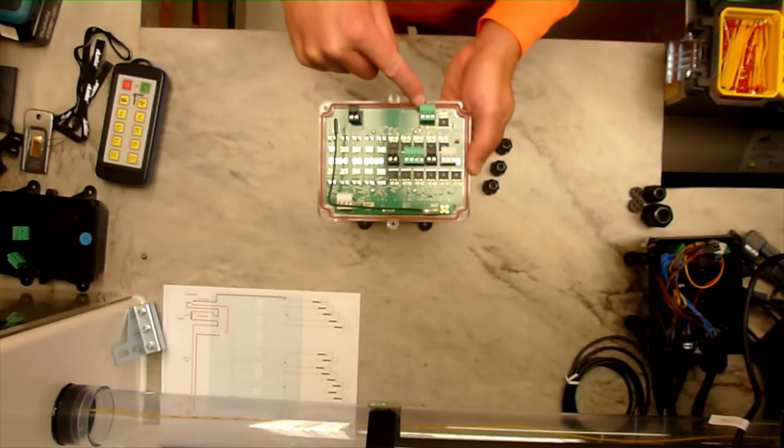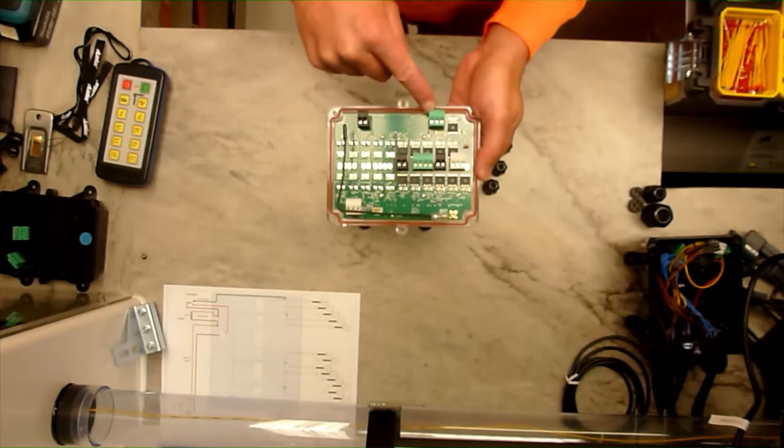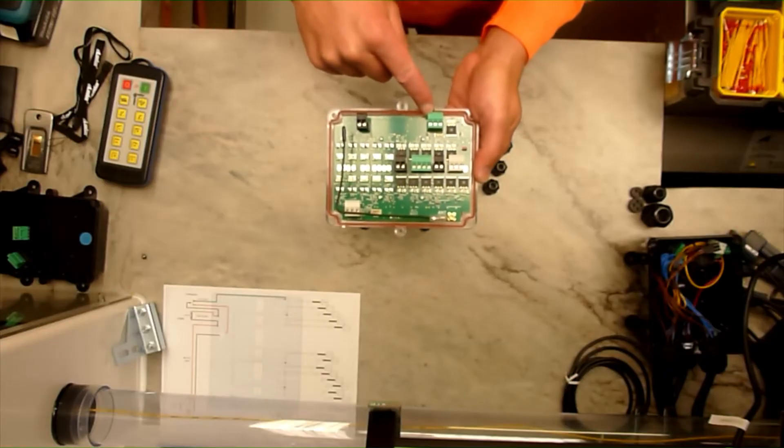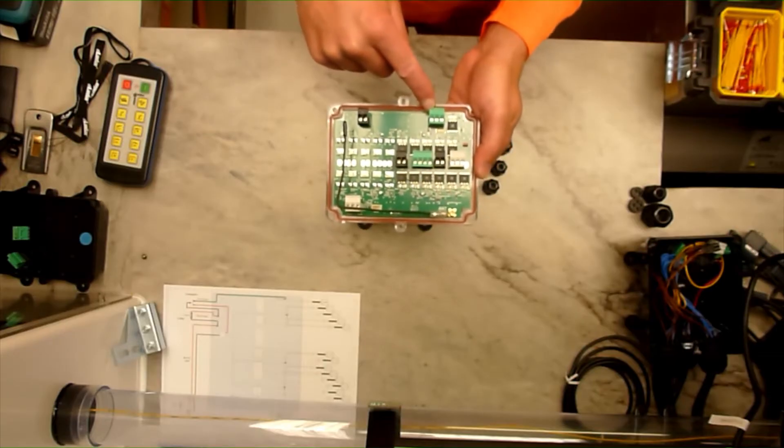Over here there's something called S that comes on with a positive output as soon as you turn your Lodar on. It's used for warning beacons and the such like.